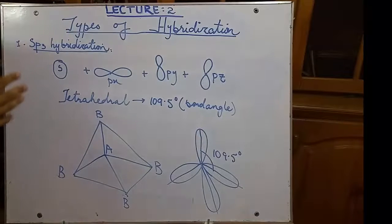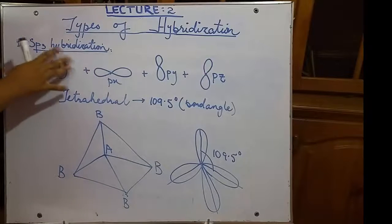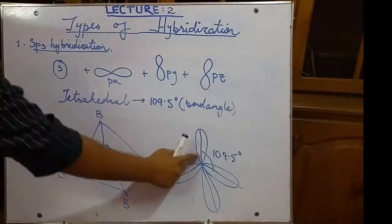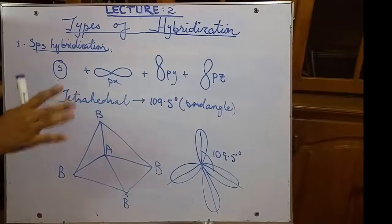And now let's consider about the shapes and the bond angles between the hybrid orbitals. The shape of sp3 hybridization is tetrahedral. And the bond angle between the tetrahedral shape is 109.5 degrees.